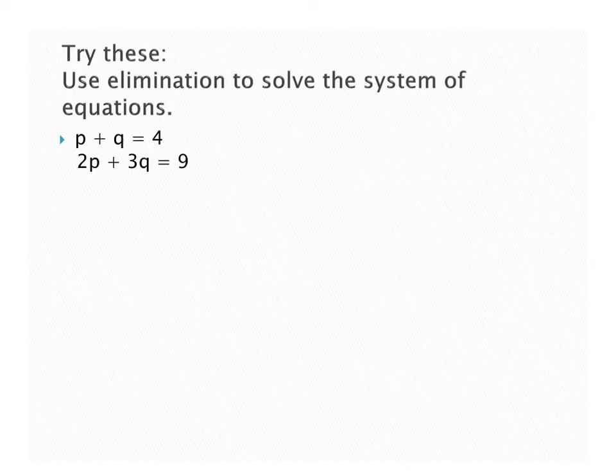You'll notice in this one, we don't have anything that's going to cancel right away. So we have a couple choices. I see that I have 2p here, I have 1p here. If I multiply this guy here by negative 2, I can change the coefficient. But I have to multiply everything in that problem.